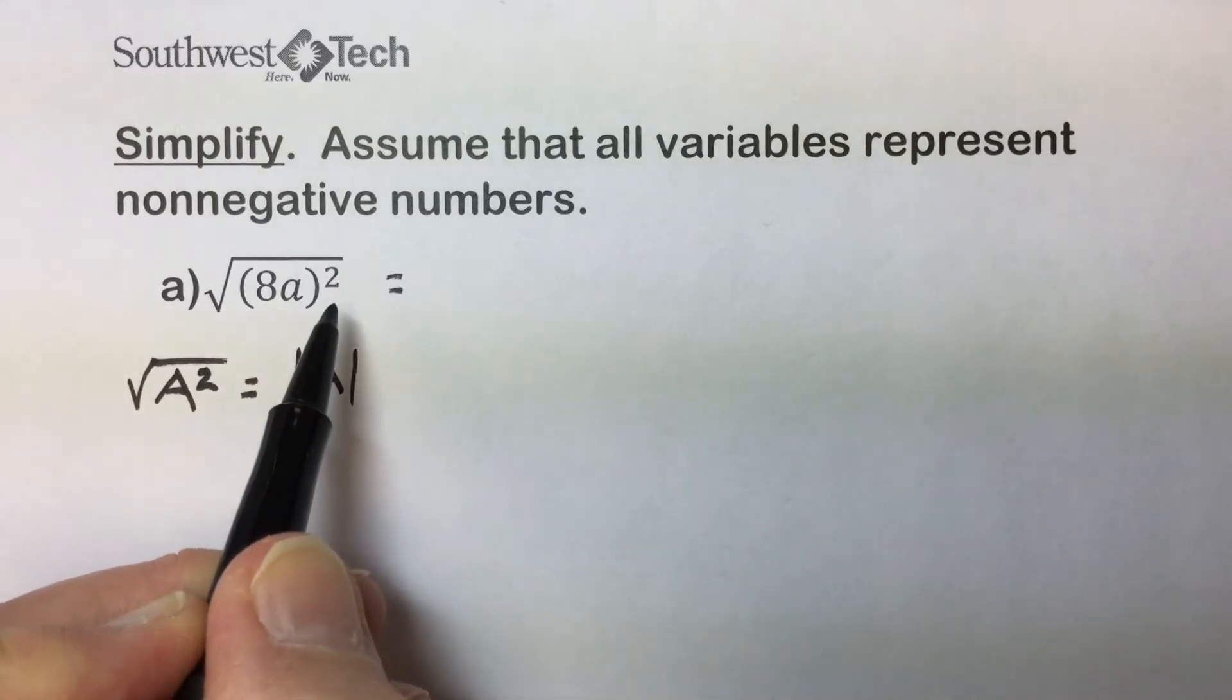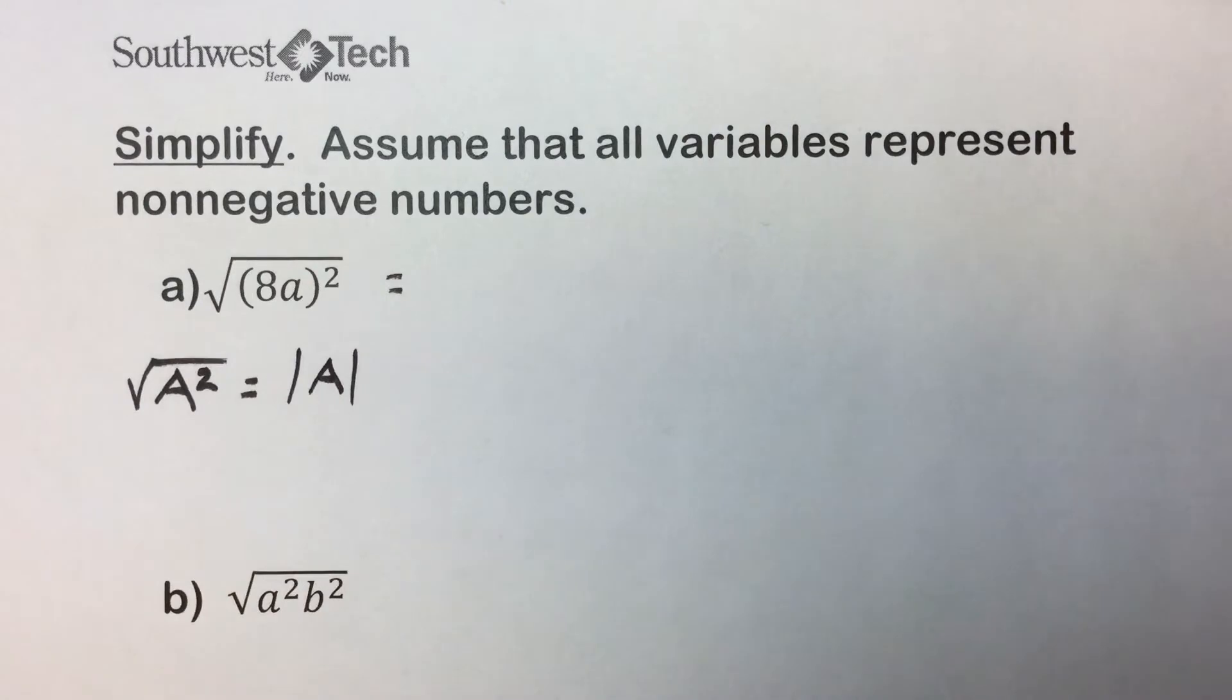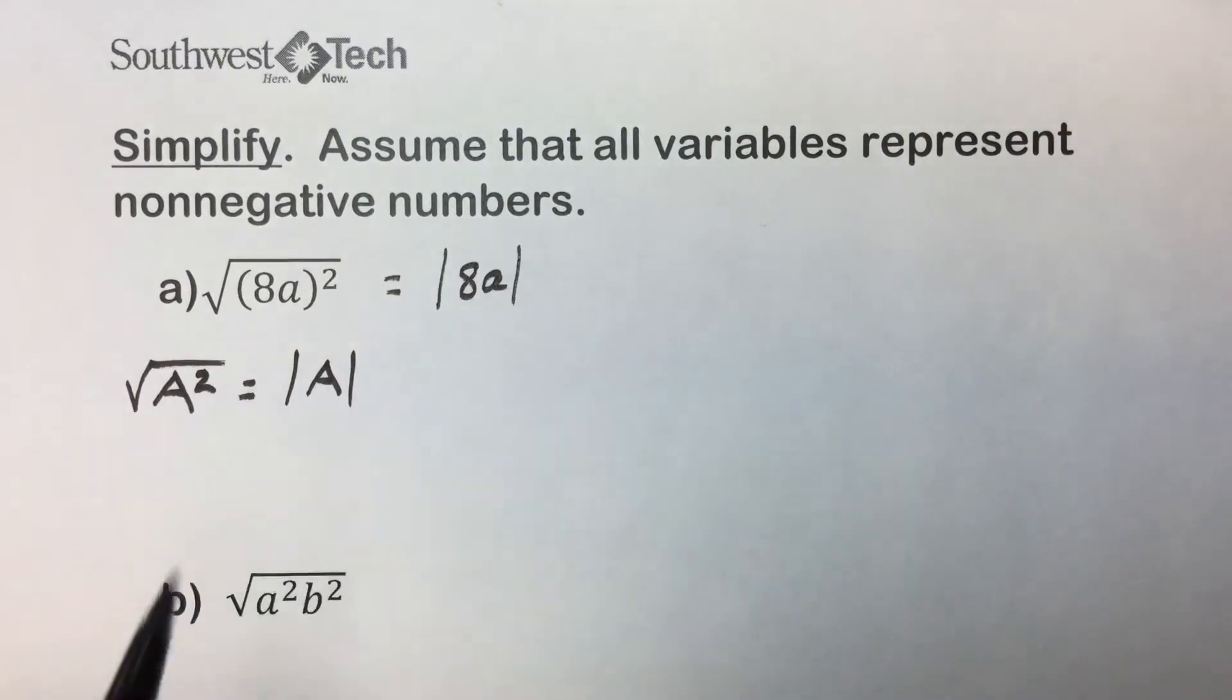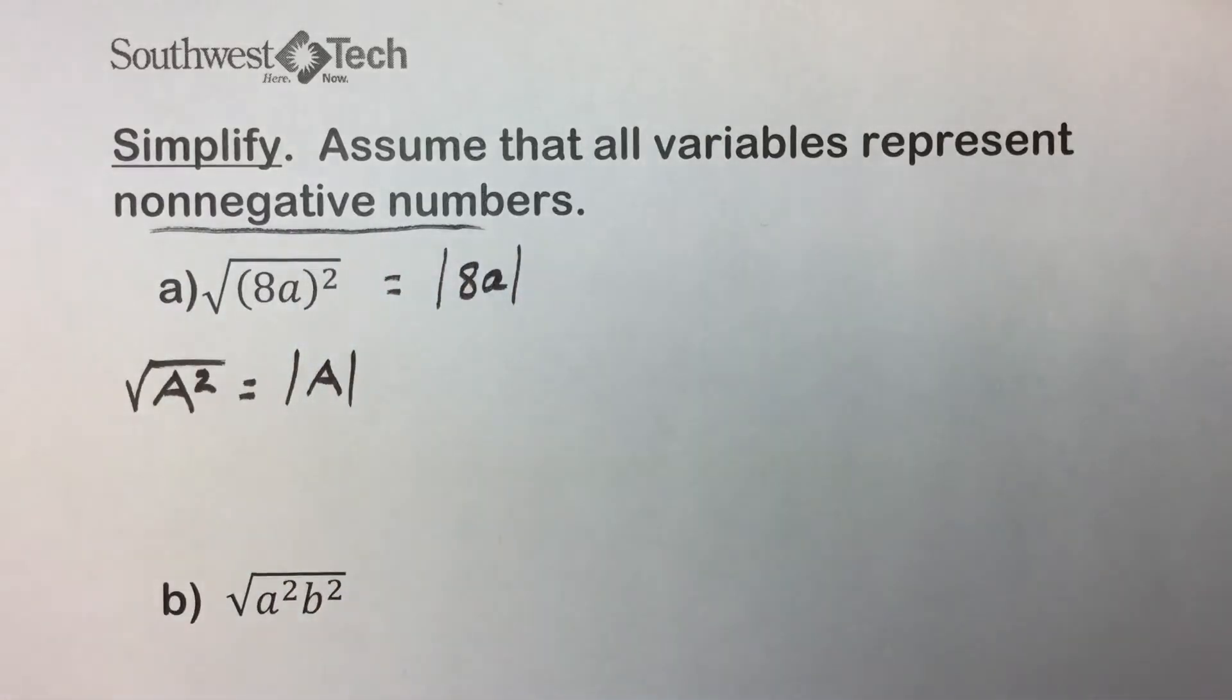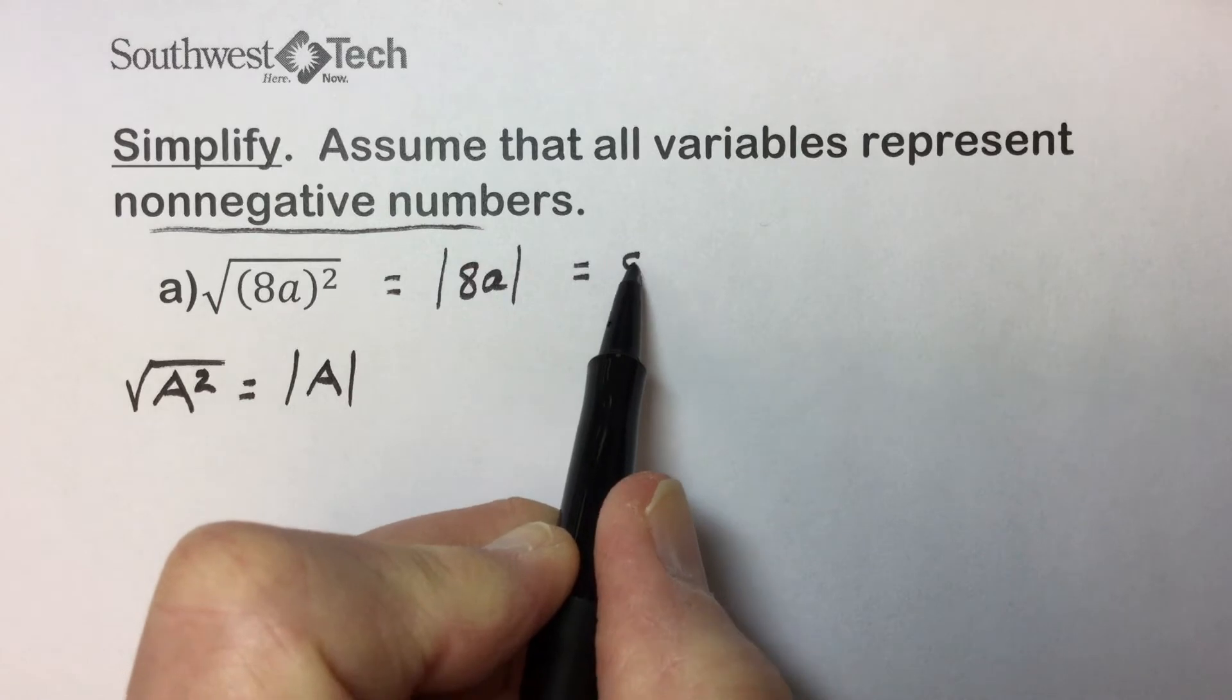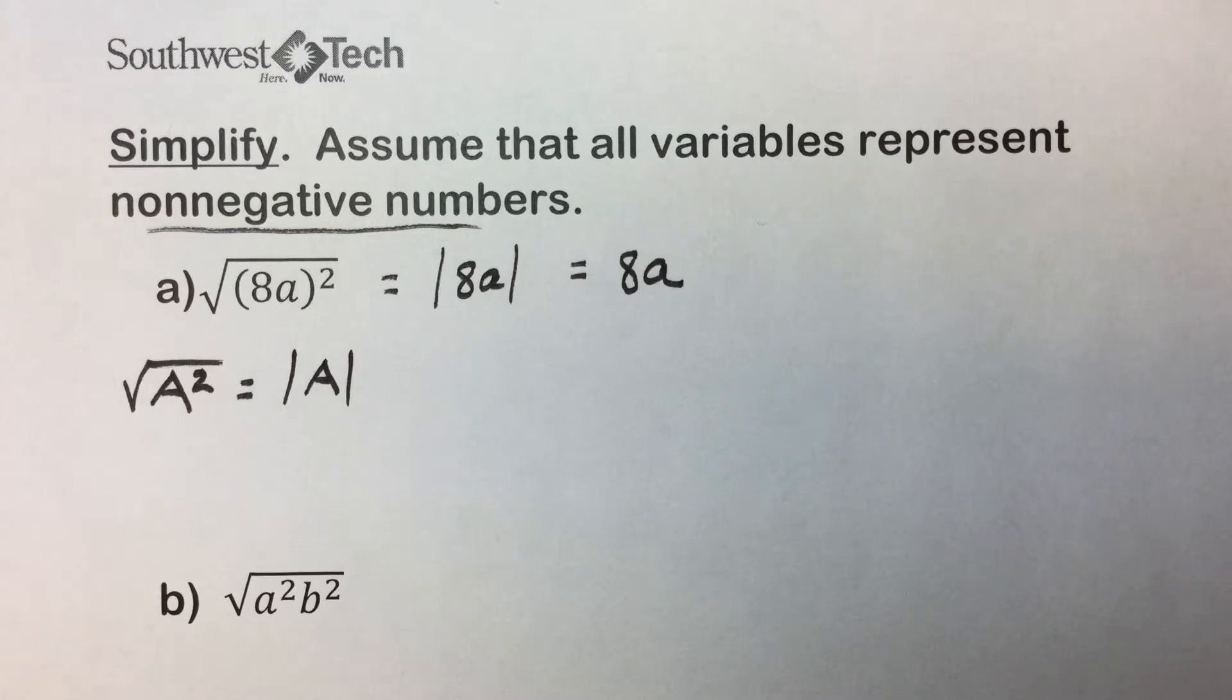So our answer here would be square root of something squared is that quantity. If we want to be precise, we can express our answer in the absolute value. But with the instructions telling us, assume that the variables are non-negative, we could also express our answer as the absolute value of 8a is 8a.